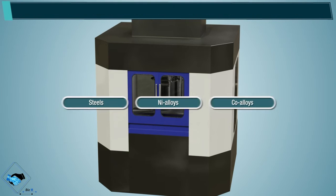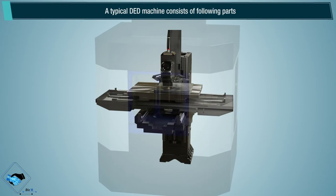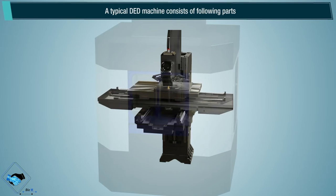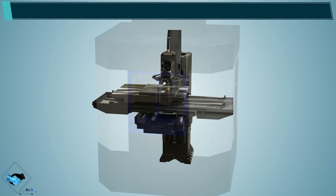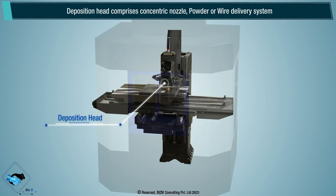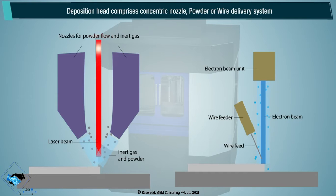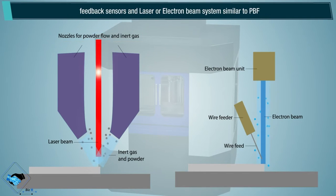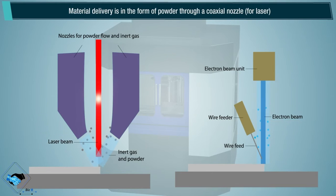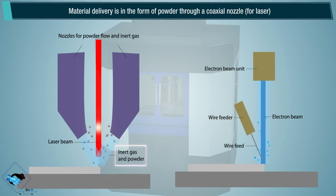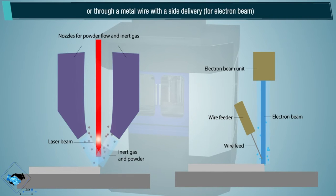A typical DED machine consists of the following parts. The deposition head comprises a concentric nozzle powder or wire delivery system, feedback sensors, and laser or electron beam system similar to PBF. Material delivery is in the form of powder through a coaxial nozzle for laser, or through a metal wire with a side delivery for electron beam.